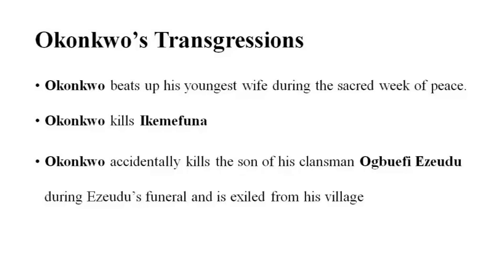Okonkwo is always under tremendous pressure to prove his masculine prowess by acting it out — by beating his wife, by killing his adopted son, or as in the third case, where his transgression results in the accidental killing of a sixteen-year-old son of a clansman. He accidentally kills him when his loaded gun fires at the boy. This loaded gun which accidentally fires and kills the boy acts as a perfect metaphor for Okonkwo, who — just like the loaded gun — acts as a loose cannon throughout the novel. He is powerful, yet it is this very power which makes Okonkwo a destructive force, just like the gun.